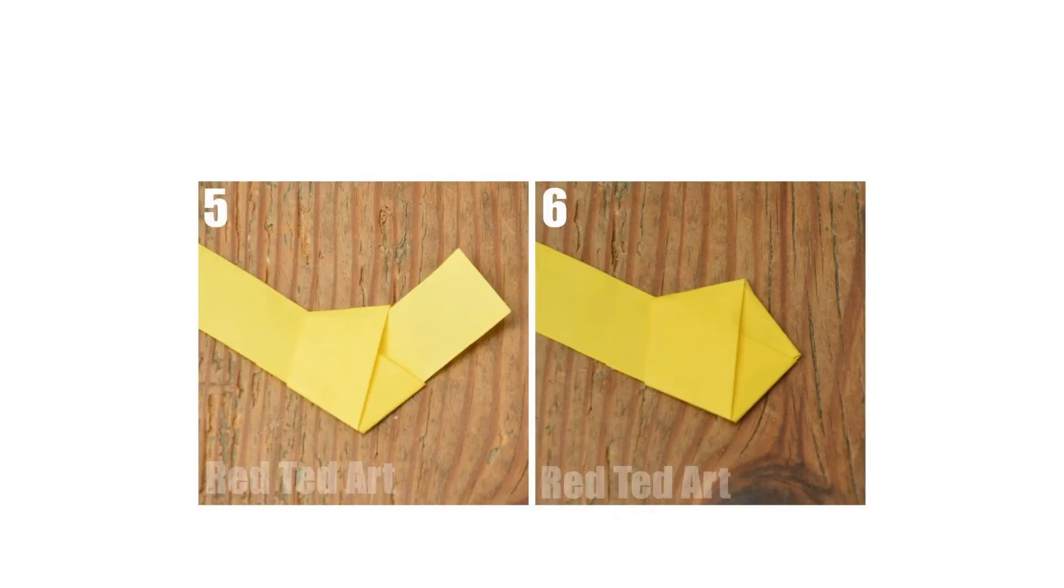Now moving on to the fifth and sixth step. For the fifth step, flip your origami lucky star over. Next, tuck in the little piece that is left over. If it is too long, tear a little off.